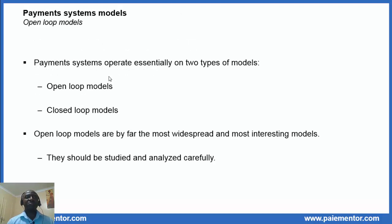All payment systems in the world operate essentially on two types of models: open-loop models and closed-loop models. What comes to your mind when I say payment systems? Maybe card payment systems like Visa, China Union Pay or MasterCard. Maybe ACH systems like EBA Step 2 in Europe or CHIPS in the US, BACS or Faster Payments in UK, maybe Swish in Sweden. You may also think of systems like PayPal or Bitcoin on the blockchain. All these systems and many others operate either as an open-loop model or as a closed-loop model.